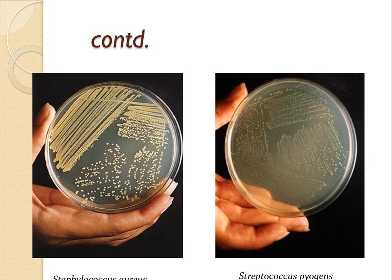Another example: Staphylococcus aureus inoculated on a petri plate shows discrete colonies. Streptococcus pyogenes colony characteristics can also be observed. In Staphylococcus aureus, discrete colonies are visible.